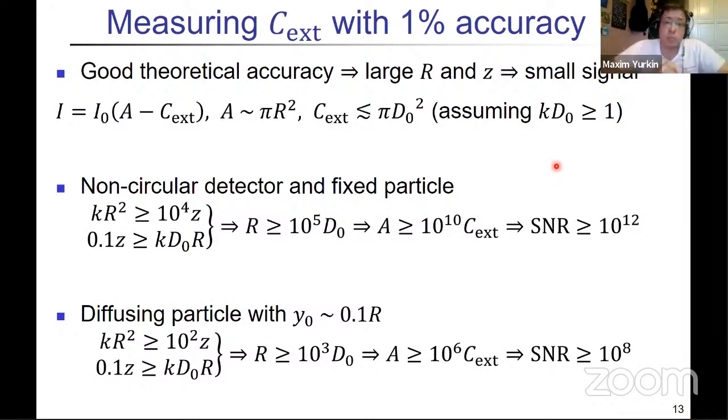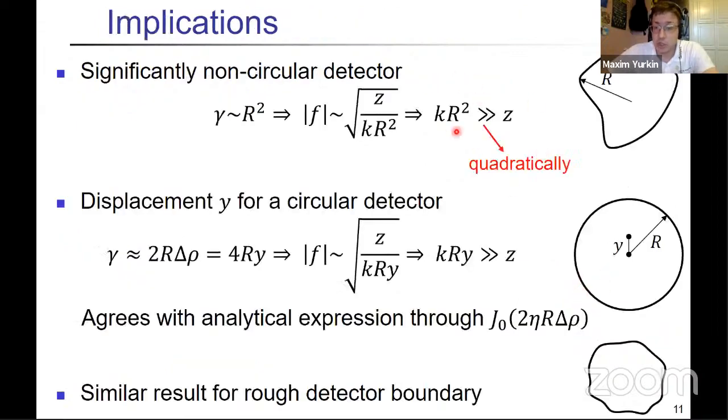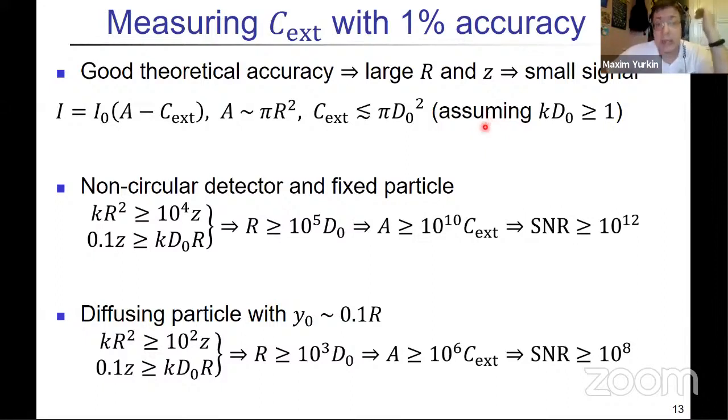This brings us to some practical implications. Suppose you want to measure your extinction with one percent accuracy. The main problem here is that first you need what I call good theoretical accuracy. What that means is that you do a specified measurement with a single detector—with particles and without particles—you want the difference to actually correspond to extinction. That means that all the previous expressions should be satisfied, because otherwise the difference will just have a different theoretical expression. This theoretical accuracy implies that you need to have large detector size and also distance to the detector, as we showed and as you saw in numerical examples before. But that necessarily means that you will have small relative signals. Basically your total intensity is proportional to detector area, and your additional signal or decrease of signal that you measure is proportional to extinction cross-section, which is more or less order of particle cross-section, at least if the particle is not much smaller than the wavelength.